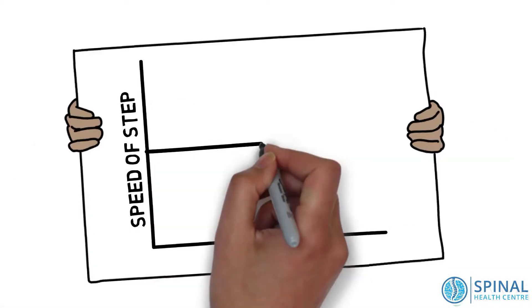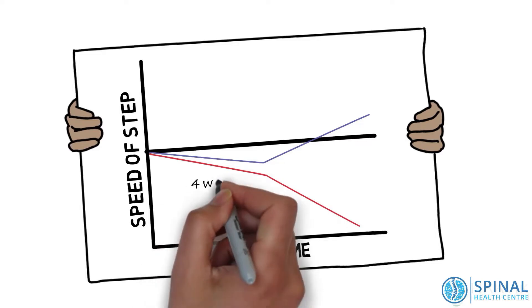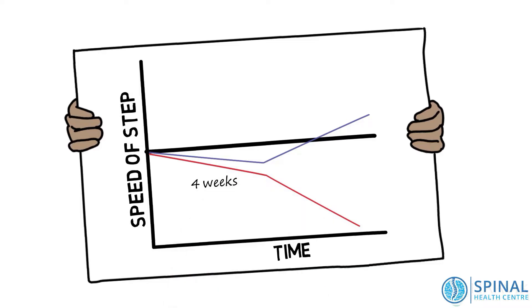If we take a look at this graph, the red line is the chiropractic group and the blue line is the control group. The higher the line, the longer it took the older people to take a fast step. What they found was that after four weeks, neither group had changed much in the speed at which they could take a step.